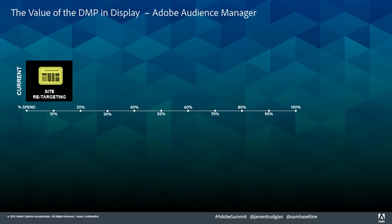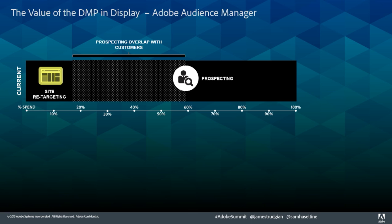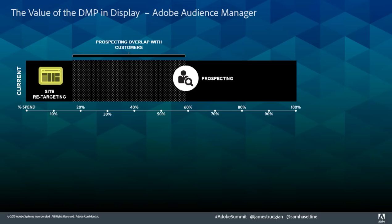What I have on screen now shows the benefits of utilising audience manager through your display channels. Currently you may be utilising around 20% of your overall display channel for site retargeting, and relying quite heavily on prospecting campaigns to enhance reach. What you may find is that you get mixed messaging between your prospecting and your overall site retargeting campaigns.